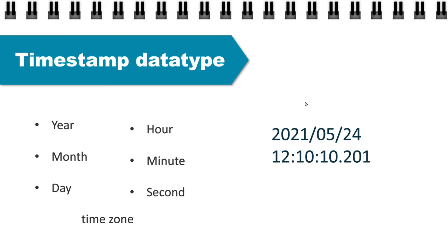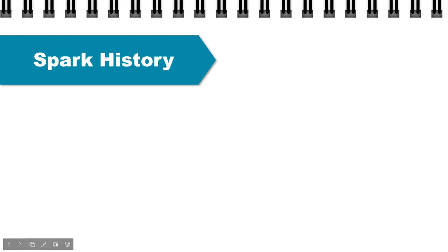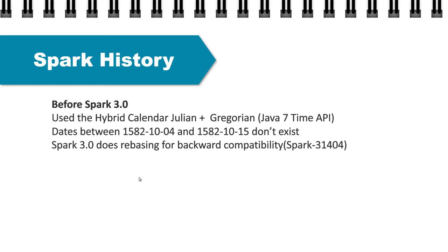This is an example of a timestamp. When we talk about date and timestamp, we need to look at how Spark uses the calendars, because when you use a timestamp you have to check it against a calendar as well. If we look at all versions before Spark 3.0, Spark was using the hybrid calendar — Julian plus Gregorian — and the API that Spark was using was the Java 7 time API. This had one limitation: you had to use both calendars together to support dates beyond and previous to 1582. But in this calendar, the dates between 4th October 1582 and 15th October 1582 do not exist and cannot be supported.